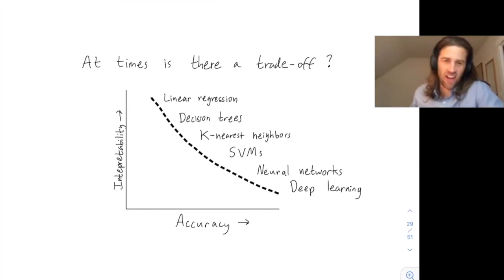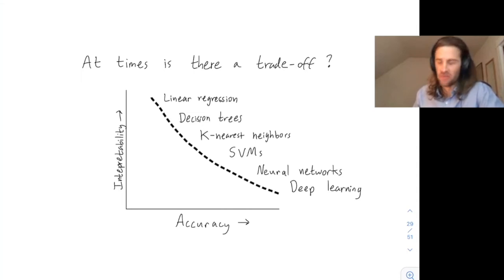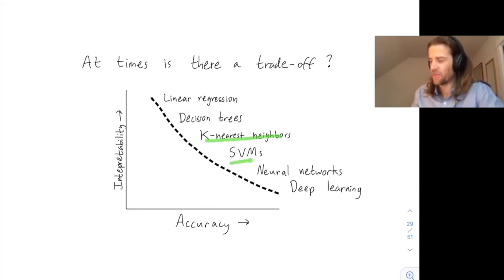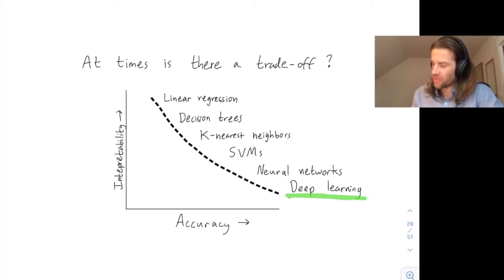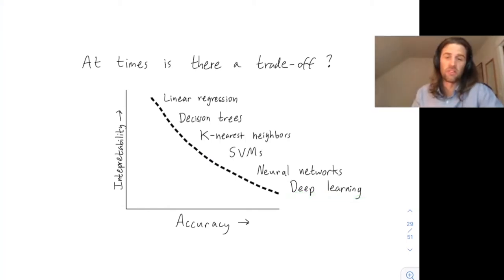This is a plot of the trade-off between accuracy and interpretability for different machine learning models. Linear regression, k-nearest neighbors, and support vector machines I think of as quite interpretable, and most of my work has been in this area. But folks have definitely done great work recently on taking persistent homology and feeding it in as a layer to a deep learning model.